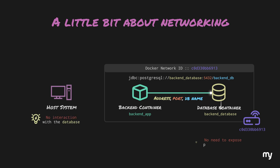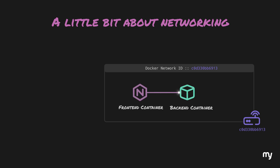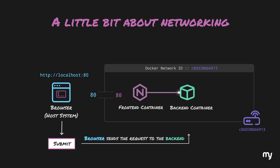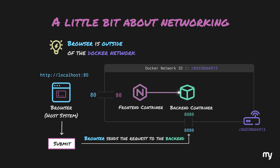Since the database runs inside a container, we replace localhost in the connection string with the container's name. This is what we specify in the backend app so it can contact the database container. Because the host system never interacts with the database directly, we never needed to expose PostgreSQL's port 5432 to the host. The frontend is served by nginx inside a container, and when we hit localhost:80 from the browser, traffic is forwarded to nginx's port 80.